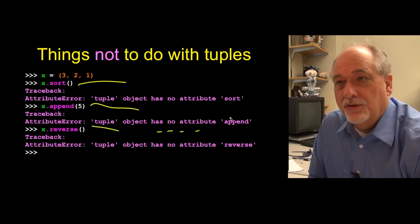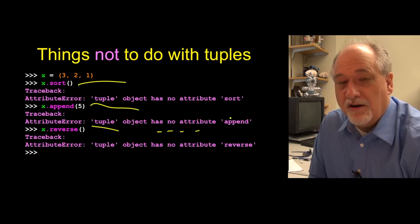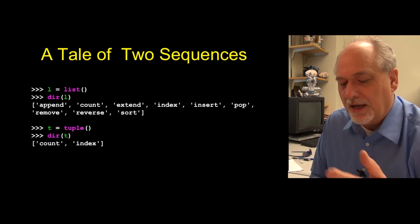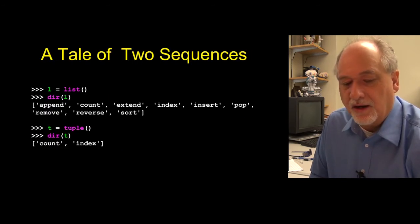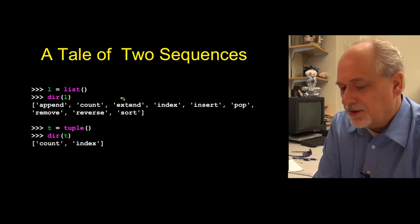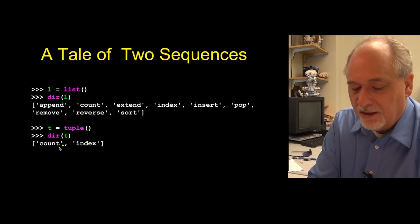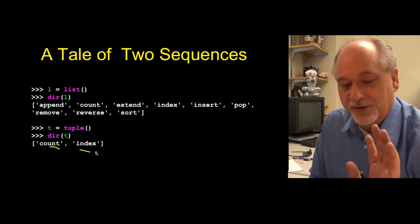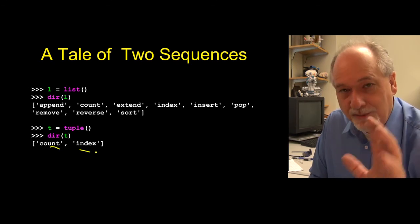So anything that you can do to a list that modifies the list is not allowed for tuples. And so you can take a look at the kinds of things that are inside the methods that are part of each list: append, count, extend, index, insert, pop. Some of these, many of these are modifying, and then count and index are the only ones that work for tuples. And so tuples are limited lists.